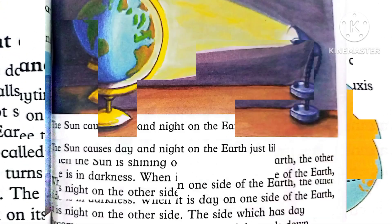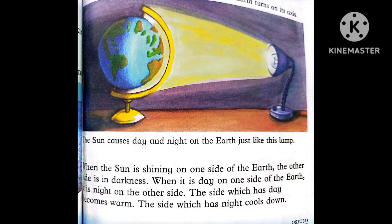Here we have a picture showing that when the sun is shining on one side of the Earth, the other side is in darkness. So on one side it is day and on the other side it is night. The side which has day becomes warm, and the side which has night cools down.